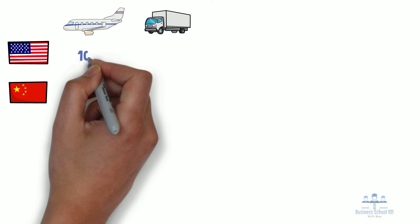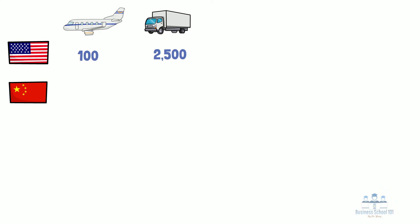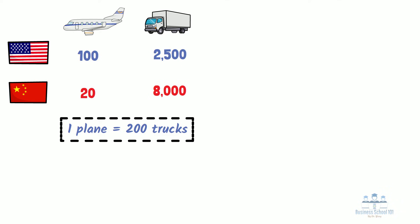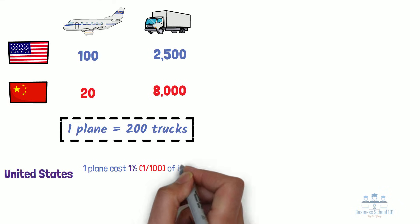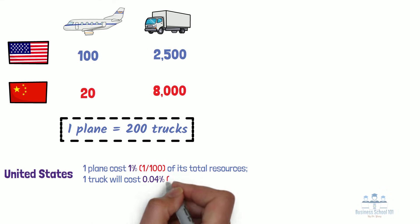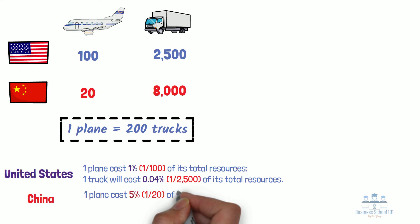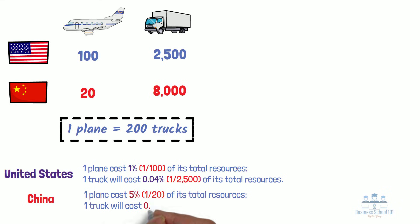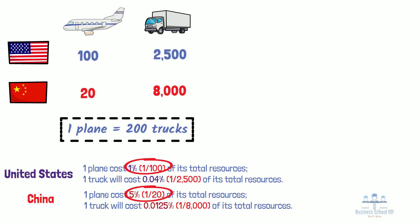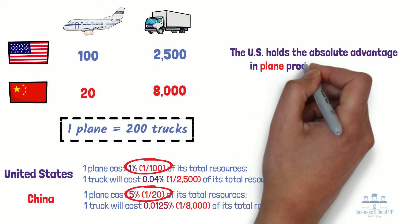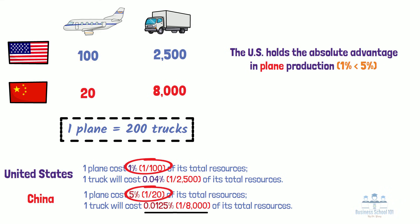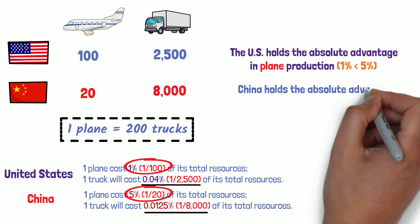Let's say that the United States can produce either 100 planes or 2,500 trucks, and China can produce either 20 planes or 8,000 trucks. In this imaginary international market, one plane can be traded for 200 trucks. For the United States, the production of one plane will cost 1% of its total resources, while the production of one truck will cost 0.04% of its total resources. Similarly, for China, the production of one plane will cost 5% of its total resources, and the production of one truck will cost 0.0125% of its total resources. Since the U.S. uses less of its resources than China to produce planes, the U.S. holds the absolute advantage in plane production. Because China uses less of its resources than the U.S. to produce trucks, China holds the absolute advantage in truck production.